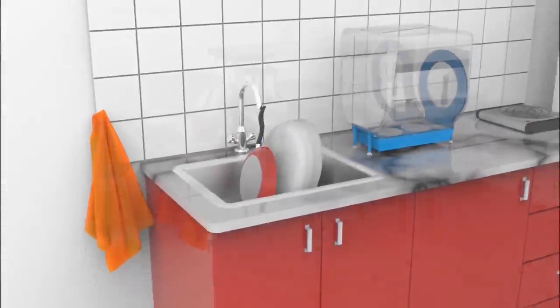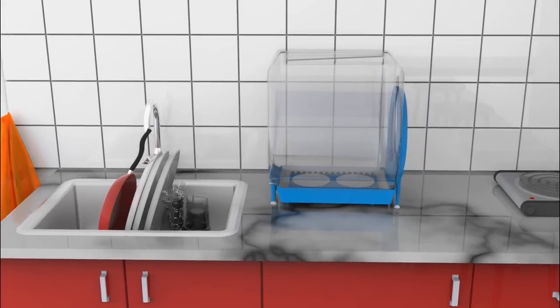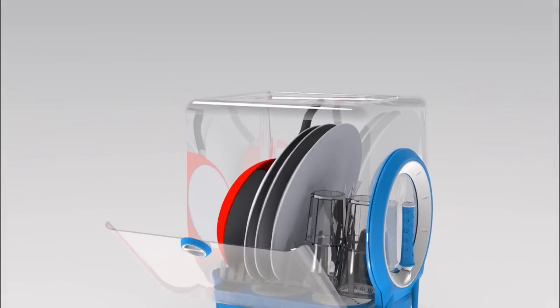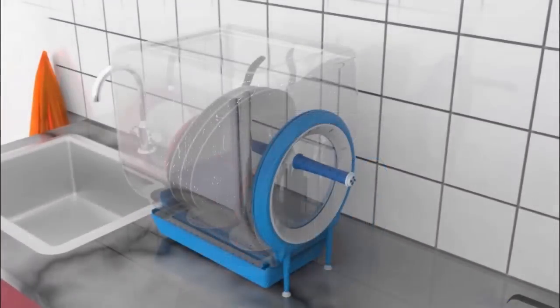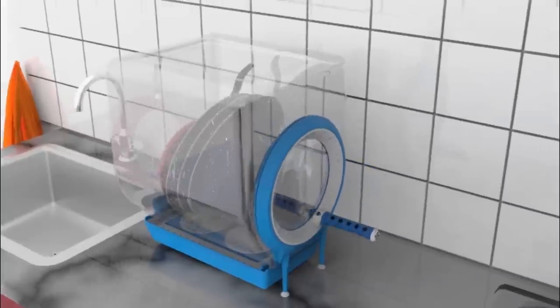Circo does not use water infrastructure and electricity is not needed at all. It was designed to replace the dish drying cabinet and is made for the modern urban kitchen.